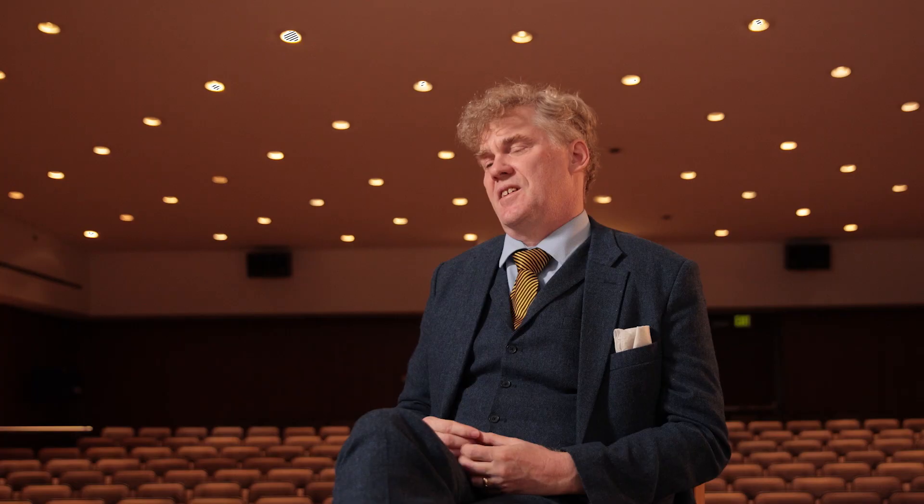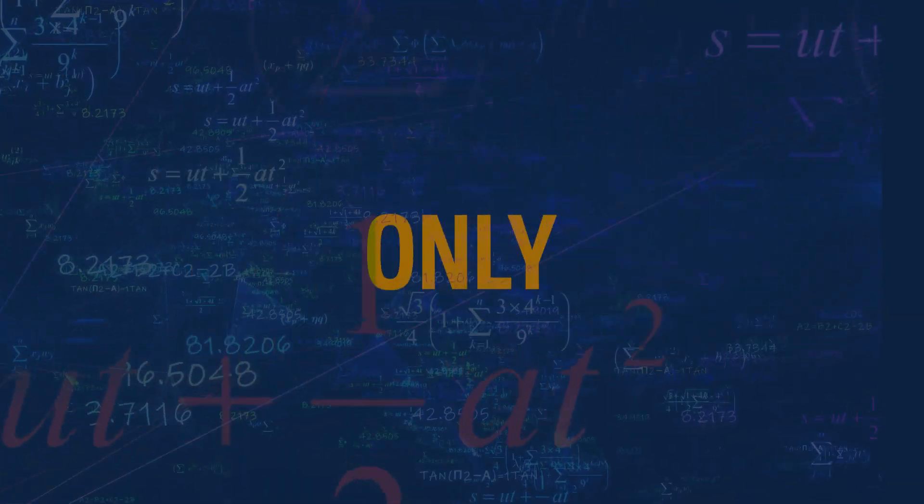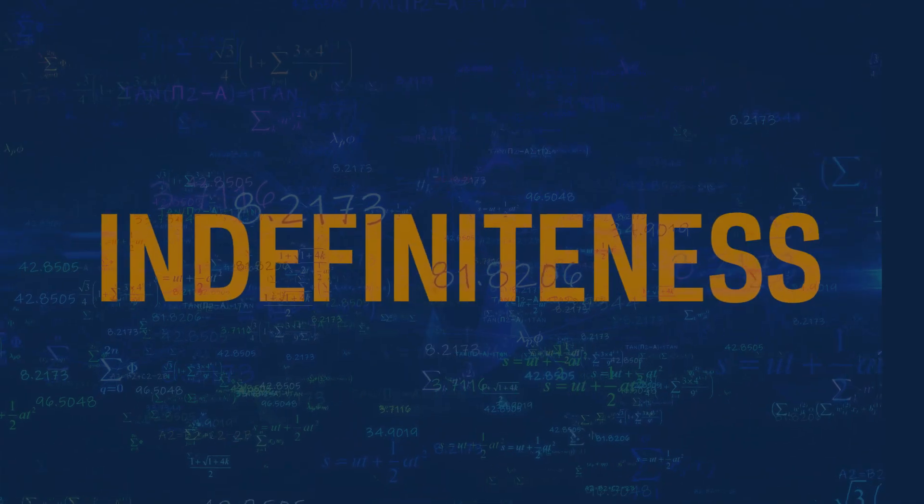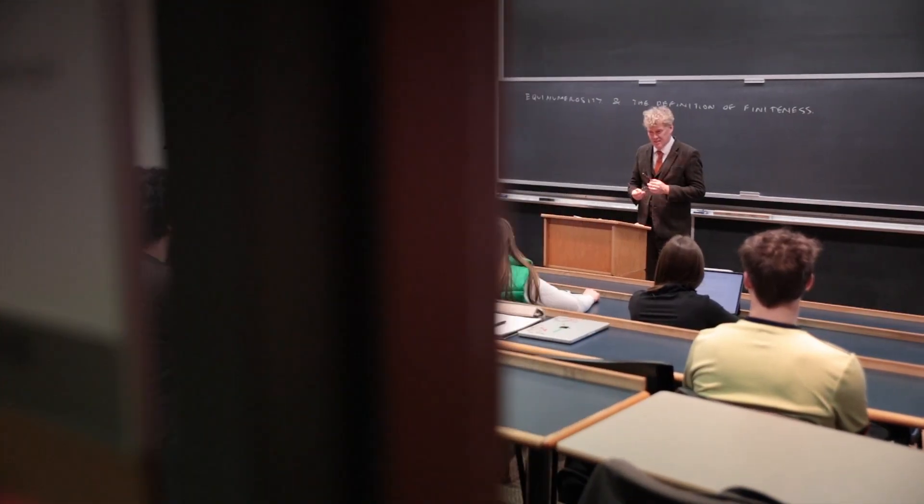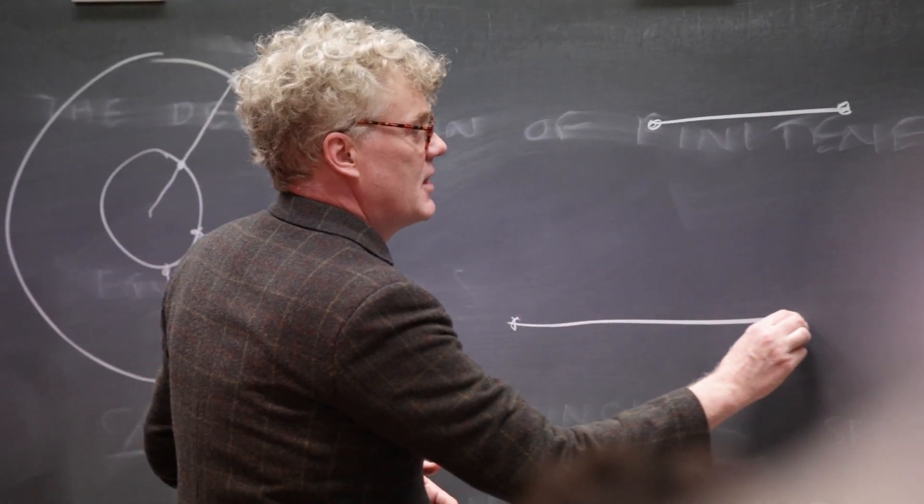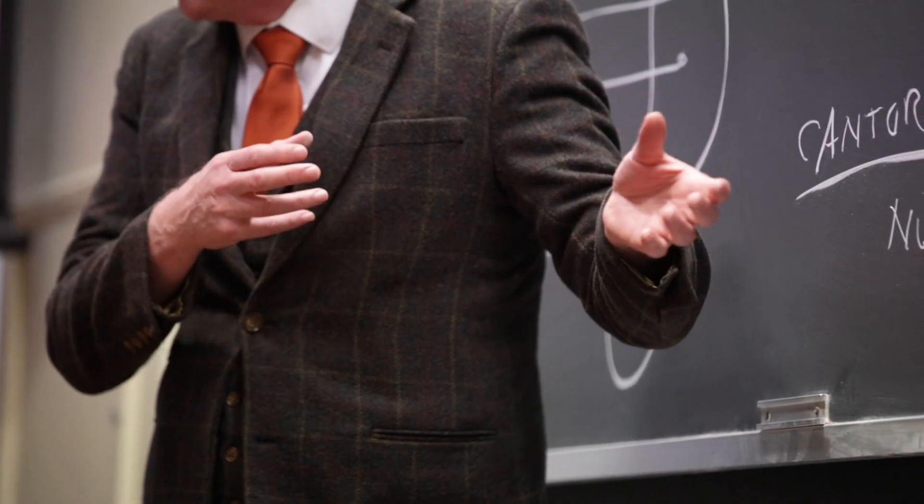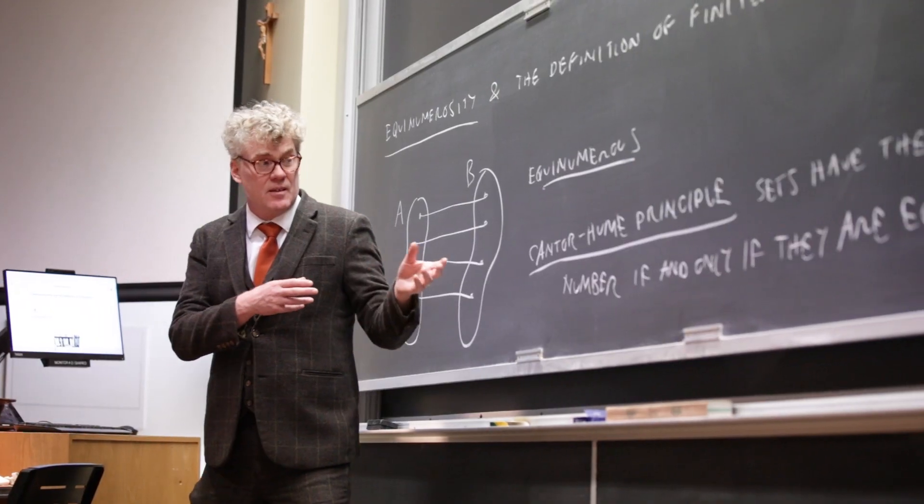There's currently raging a debate in the philosophy of set theory. So the question really at its core is, is there only one mathematical reality? Or is there a kind of indefiniteness to mathematical questions? I've been a strong defender of set theoretic pluralism, and I'm defending the view that we have more than one concept of set, and that when we ask a question about set theory, there won't necessarily be a determinate answer.